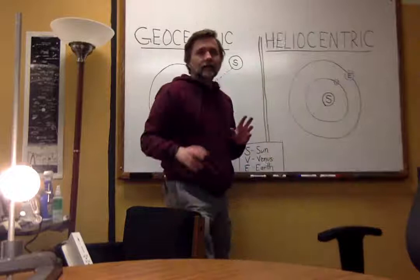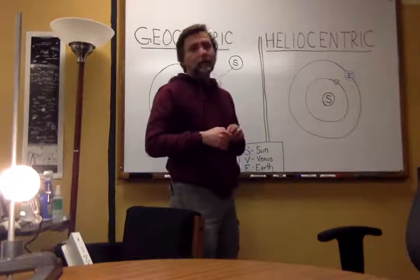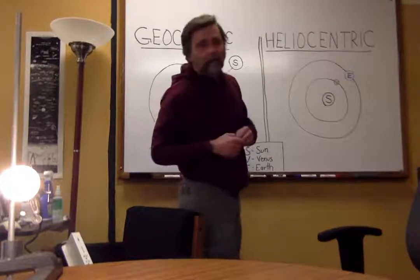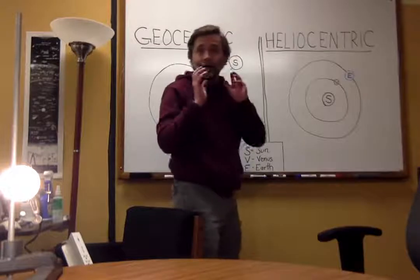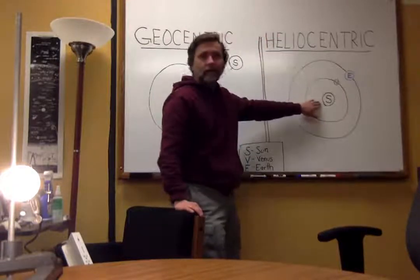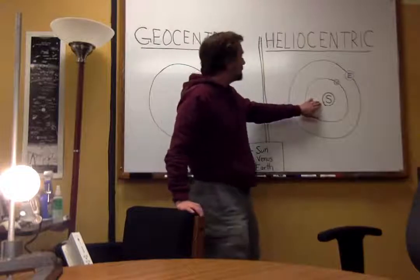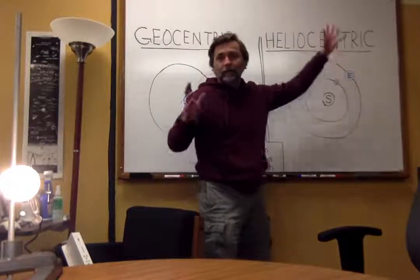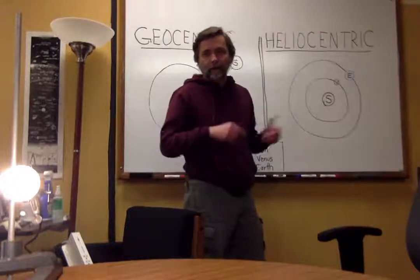Now, as we know, in the 1600s, a new model was proposed. It wasn't even entirely new then. But, the heliocentric model proposes that helios, the Sun, is at the center, and that Venus, and Earth, and the other planets, go around the Sun.